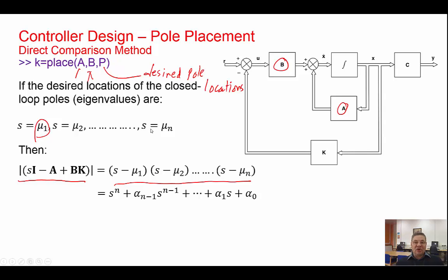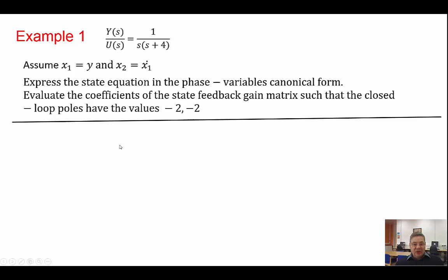The place command does not work if you want to place two identical poles. In that case, there is another command based on Ackermann's formula which can be used. In order to demonstrate, we consider this example.